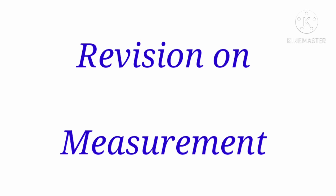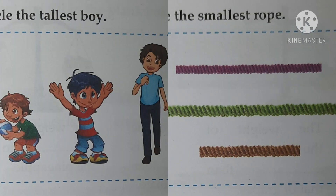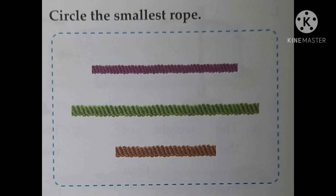Let us see what is written. Circle the tallest boy — you have to circle it. Next, circle the smallest row. Which one is smallest?